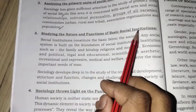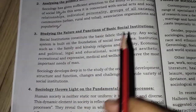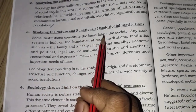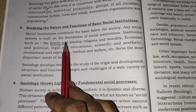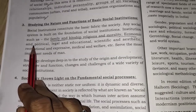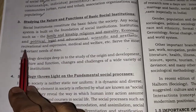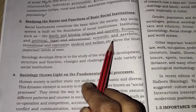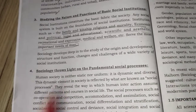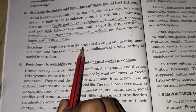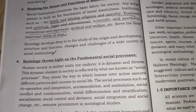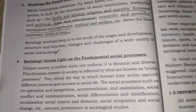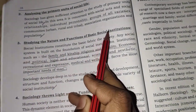Next is the study of the nature and function of basic social institutions. Social institutions constitute the basic fabric of society, and any social system is built on the foundation of social institutions. Institutions such as the family, kinship relationships, morality, economic, political, legal, educational, scientific, aesthetic, recreational, and medical welfare serve the important needs of humans. Sociology delves into the study of the origin, development, structure, function, and changes of a wide variety of social institutions.